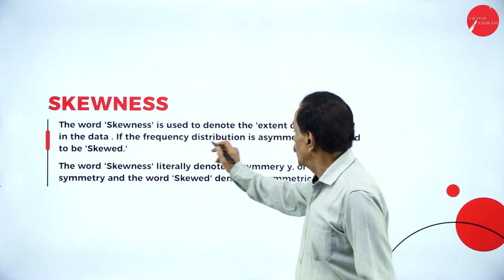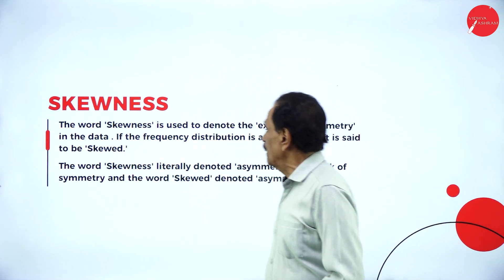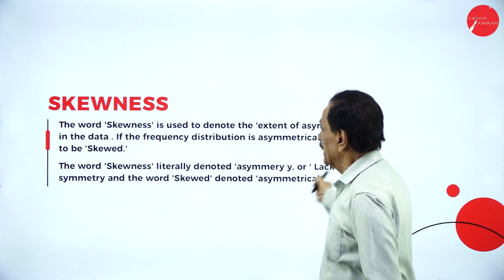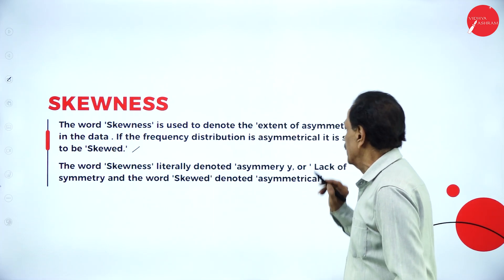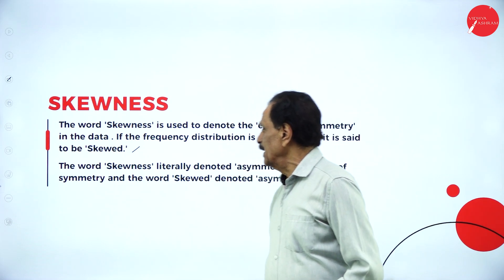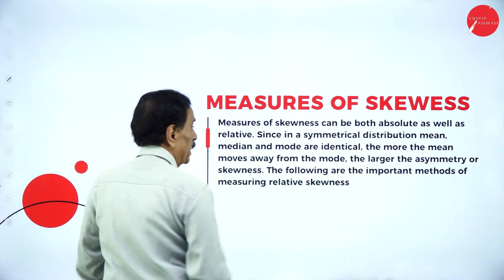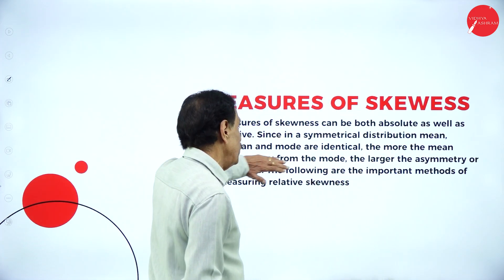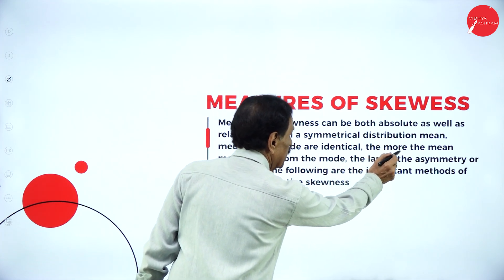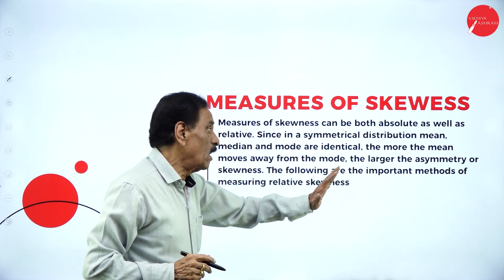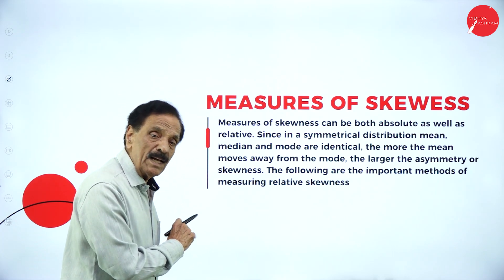The word skewness is used to denote the extent of asymmetry in data. If the frequency distribution is asymmetric, it is said to be skewed. The word skewness literally denotes asymmetry or lack of symmetry, and the word skewed denotes asymmetrical. Measure of skewness can be both absolute as well as relative. Since in a symmetrical distribution, mean, median, and mode are identical, the more the mean moves away from the mode, the larger the asymmetry of skewness.